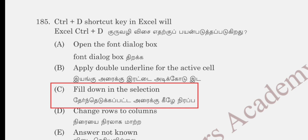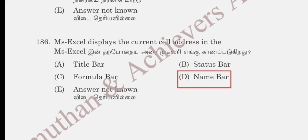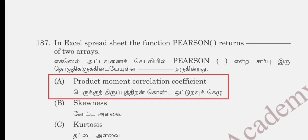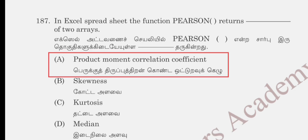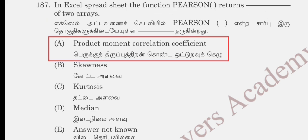Question 186: MS Excel displays the current cell address in the title bar, status bar, formula bar, or name bar. Name bar is correct. Question 187: in Excel spreadsheet, the PEARSON function returns the product moment correlation coefficient of two arrays — options are product moment correlation coefficient, skewness, kurtosis, or median. Product moment correlation coefficient, option A, is correct.